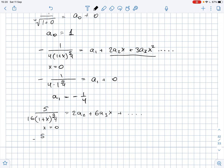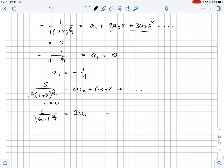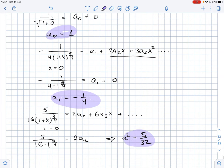Again, we plug x equals 0 and we get that 5 over 16 times 1 to the power of 9 over 4 equals 2a2. So we get that a2 equals 5 over 32. Let me highlight all a's that we have found. So a1, a2 and here we have a0.